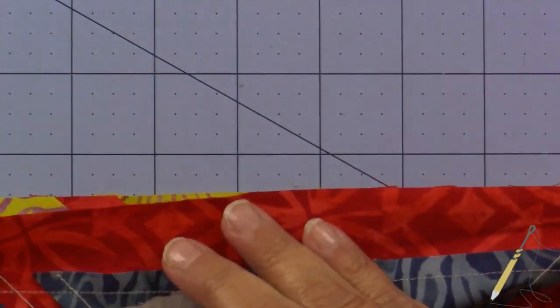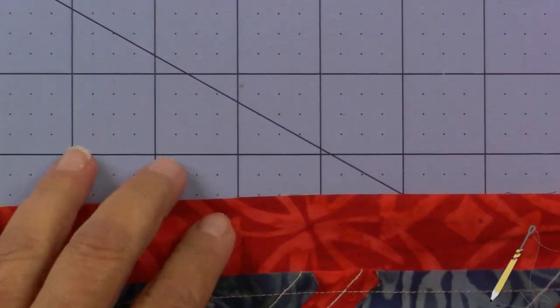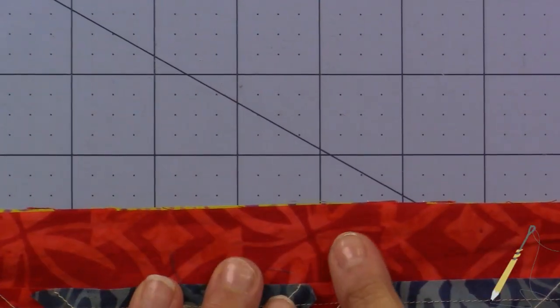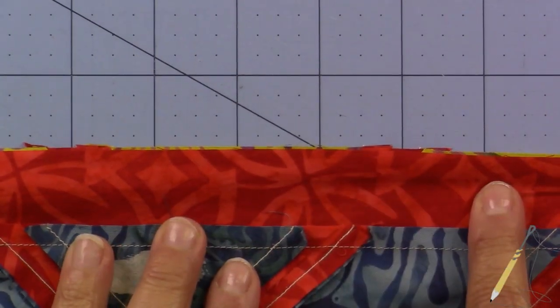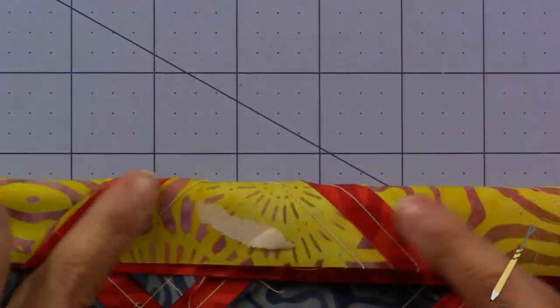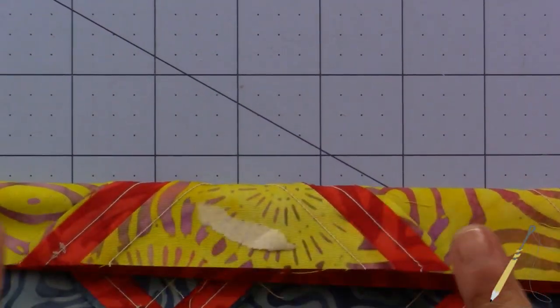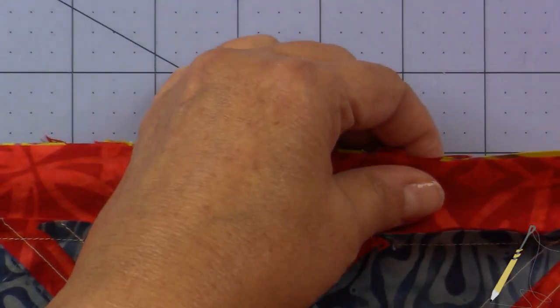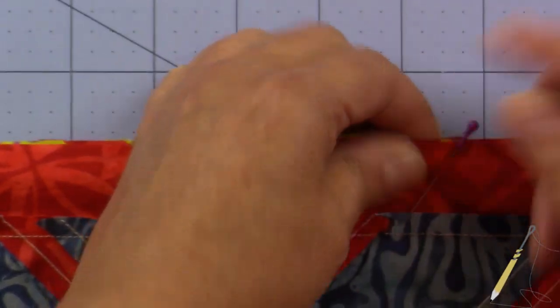And I also found that it's easier and looks better if your sashings are at the top and your piece, all this stuff down here, is at the bottom next to your feed dogs. It just makes it easier and I think that the feed dogs pull in some of that fullness. Okay, so that's how you do it when you're stitching a sashing to a block.